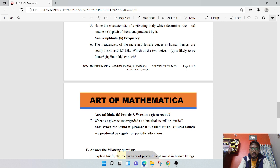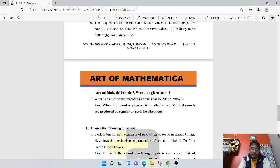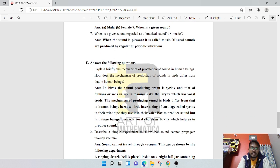When is a given sound regarded as musical sound or music? When the sound is pleasant, it is called music. Musical sounds are produced by regular or periodic vibrations. If any sound is in a regular pattern, if it has a system of vibration over time, then that is music.